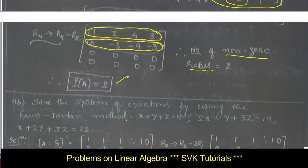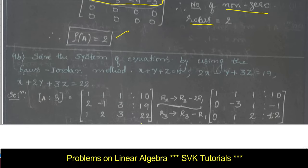Moving on to question 9b: solve the system of equations by using the Gauss-Jordan method. They are going to provide the system of equations and you are required to solve this problem by the Jordan method. The Jordan method requires reducing the given matrix to diagonal form. Consider the system of equations in matrix form and write the augmented matrix A|B. B is the constant matrix: 10, 19, and 22.